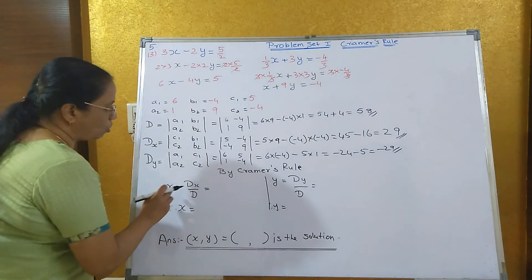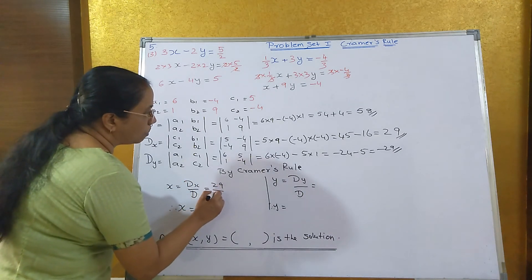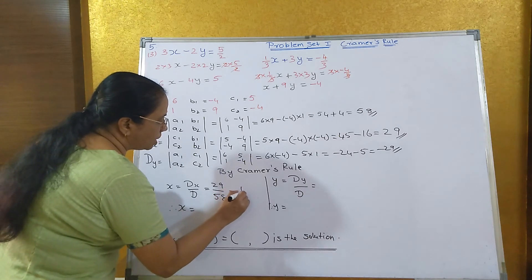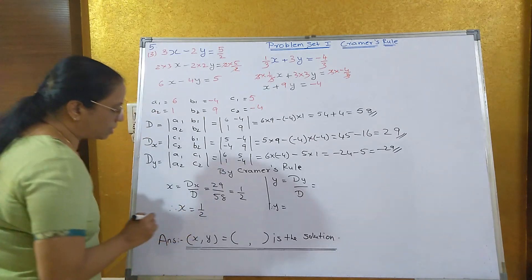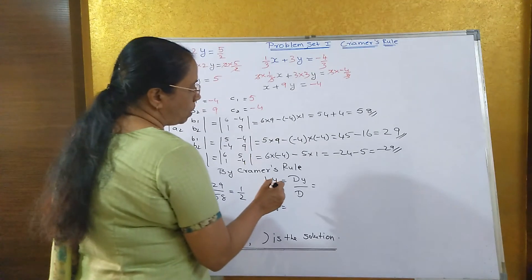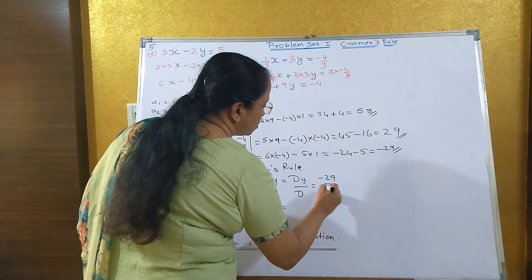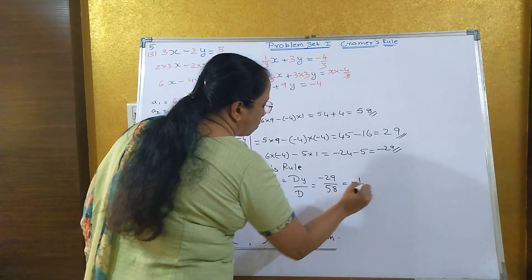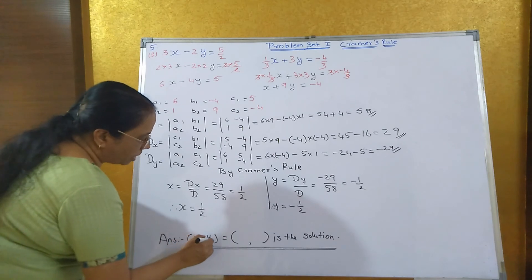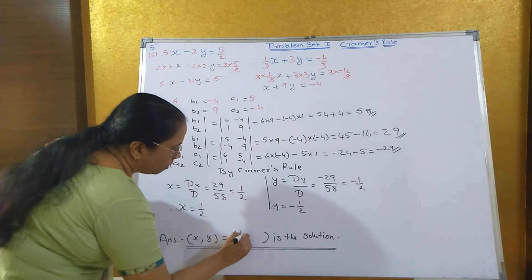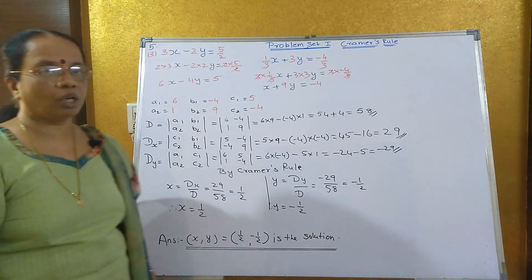By Cramer's Rule, x equals Dx upon D, that is 29 upon 58, which equals 1/2. Similarly, y equals Dy upon D, that is minus 29 upon 58, which equals minus 1/2. So the solution (x, y) is (1/2, minus 1/2).